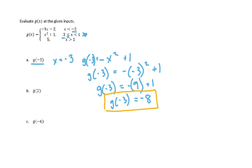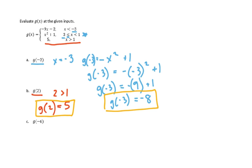Moving on to our second input, we have g of two. We identify which function is defined on the domain that includes x equals two. That is our third function, g of x equals five, because it is defined on the domain where x is greater than one, and two is in fact greater than one. So g of x is always five when x is greater than one, meaning g of two equals five.